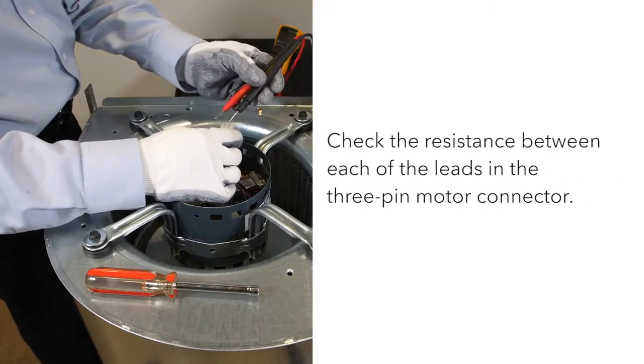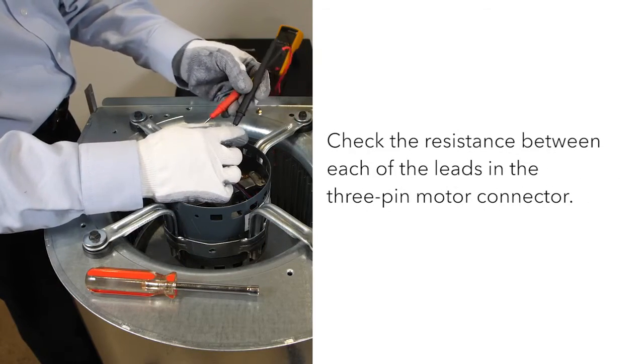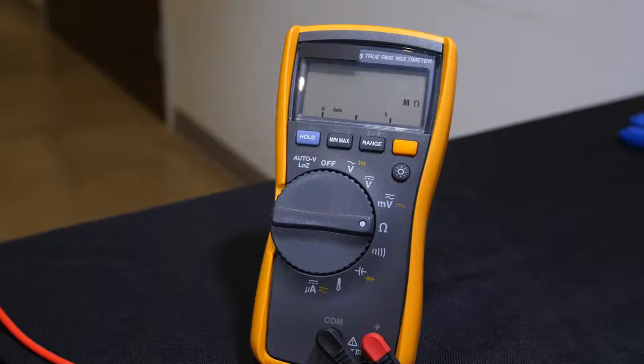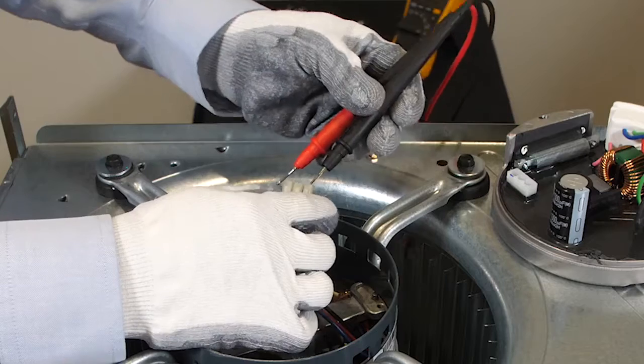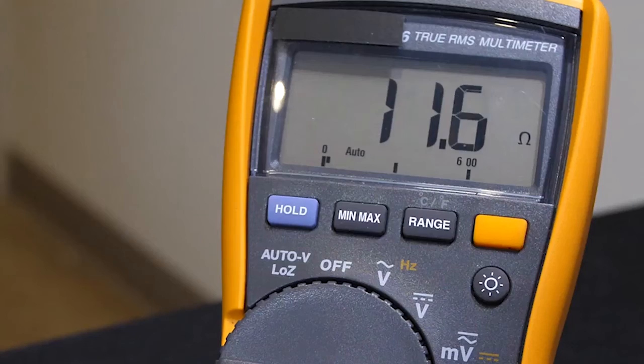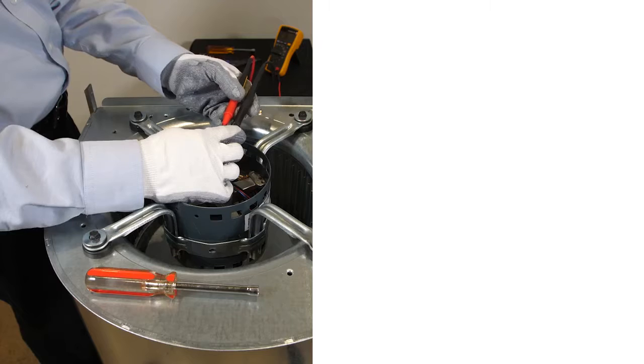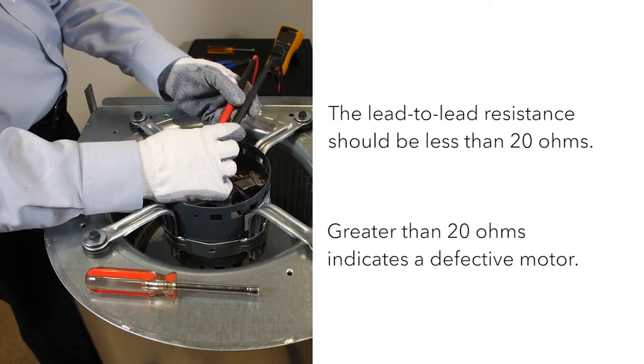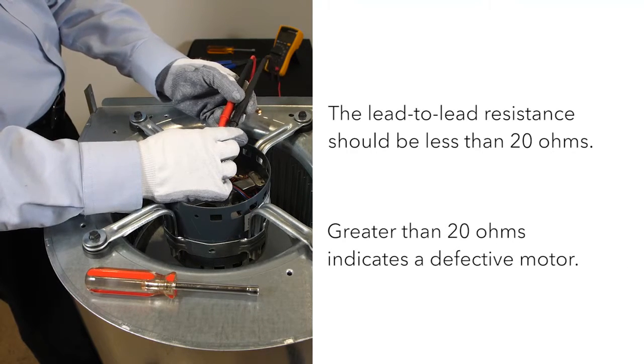Check the resistance between phase to phase by checking between each of the leads and the three-pin motor connector. The lead to lead resistance across any two leads should be less than 20 ohms and each lead to lead resistance should be the same within plus or minus 10%. If this test fails and you have greater than 20 ohms, it means you have a defective motor and it needs to be replaced.